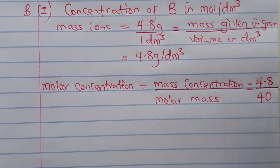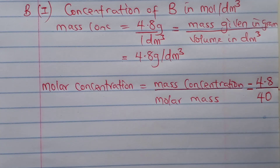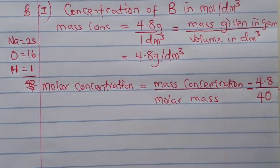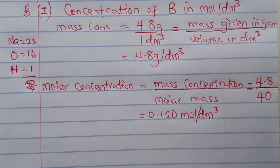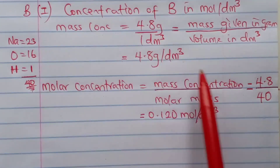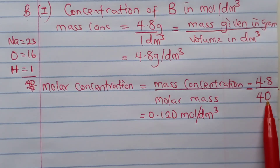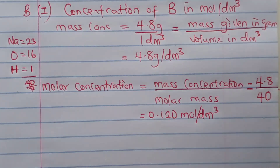I know you'll be asking: how do I get 40? The 40 comes from the molar mass of sodium hydroxide. As you can see on the screen, sodium is 23, oxygen is 16, hydrogen is 1 — adding them together gives 40. With our calculator, 4.8 divided by 40 gives us the answer. Note that 4.8 is in grams per dm³ and 40 is in grams per mole. The first part of question B has been answered.